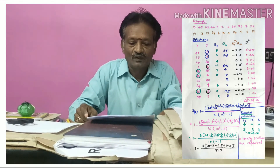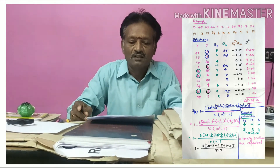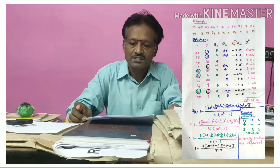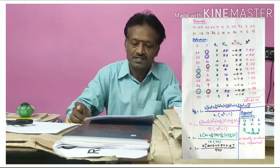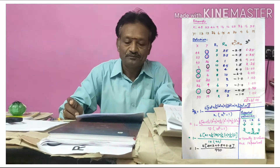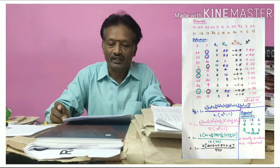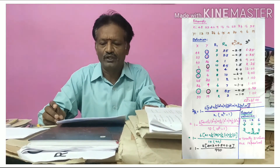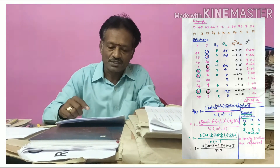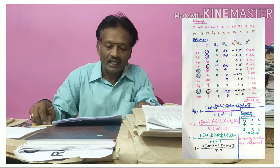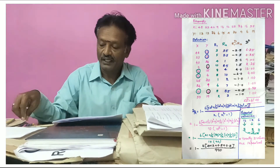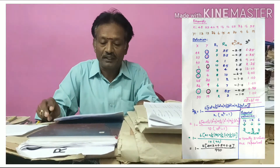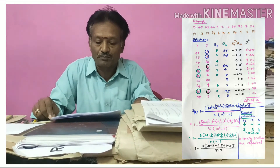Two variables x and y are given. The x values are: 48, 33, 40, 9, 16, 16, 65, 24, 16, and 57. The y values are: 13, 13, 24, 6, 15, 4, 20, 9, 6, and 19. In the x series, the value 16 is repeated three times. In the y series, two values are repeated: 13 is repeated twice and 6 is also repeated twice.